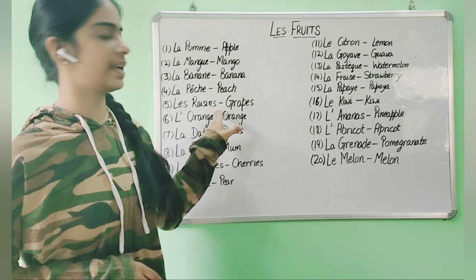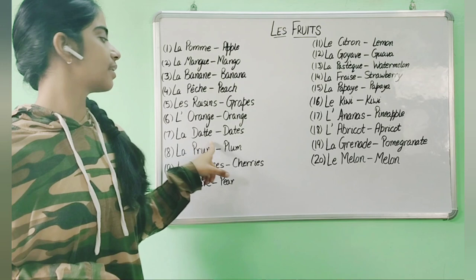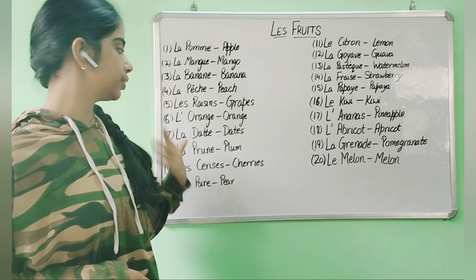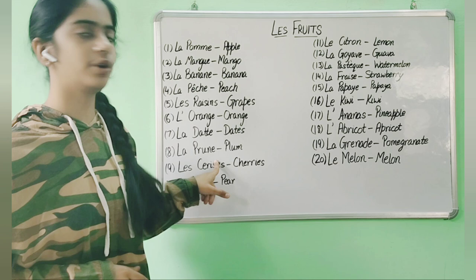Then we have grapes, which are les raisins, les raisins. Then orange, l'orange, l'orange. Then we have dates, which are known as la datte — that's the single form, la datte. If you want to use the plural word you will use les dattes, with an S at the end.